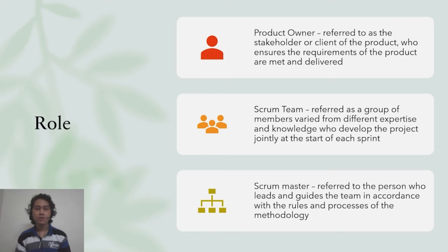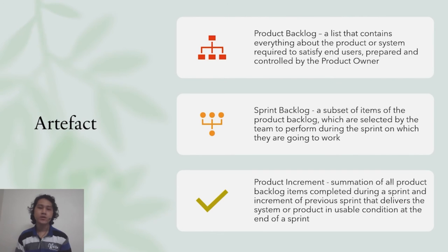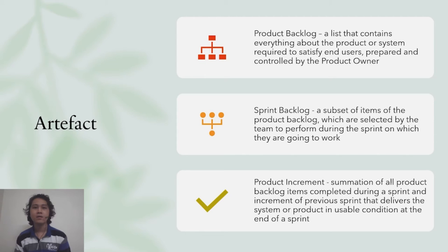I'm Dan Li Zuan, metric number 71764. Scrum consists of three general roles: product owner, who is the stakeholder or client ensuring product requirements are met; Scrum team, a group of members with varied expertise who develop the project jointly at the start of a sprint; and Scrum master, who leads and guides the team according to Scrum rules and processes. There are three artifacts: product backlog, a list of everything required to satisfy end users prepared by the product owner; sprint backlog, a subset of product backlog items selected for the current sprint; and product increment, the summation of all completed backlog items delivering the system in a usable condition at the end of a sprint.